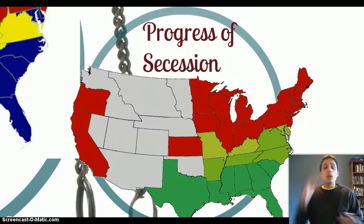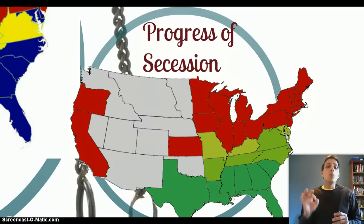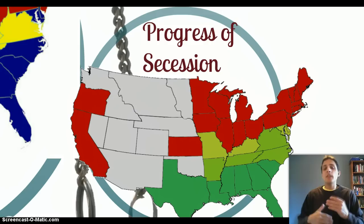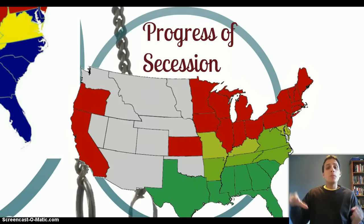The border states — Missouri, Kentucky, Maryland, and Delaware — do not secede from the Union at all, and they all have slavery. So when you think of the Civil War, a lot of people like to simplify it as slave states versus free states. It's not that simple — it's much more complex than that. Not all of the slave states are going to secede from the Union, and there are lots of reasons why. We're really going to analyze that a lot in class.